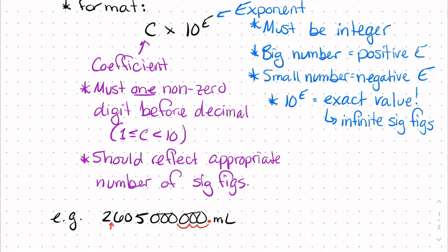If we need the decimal point to end up between the 2 and the 6, that means we're moving at 1, 2, 3, 4, 5, 6, 7, 8, 9 places.